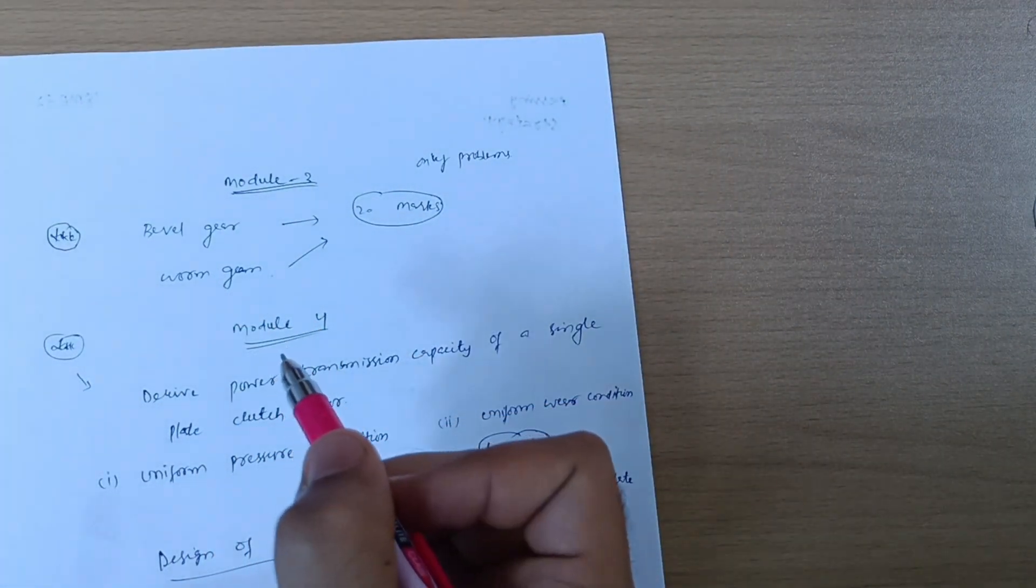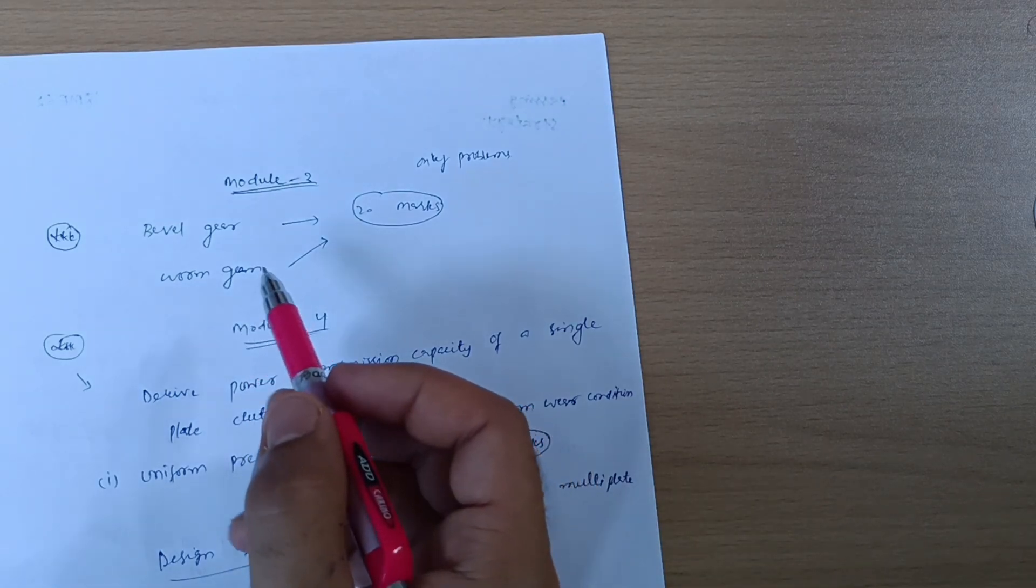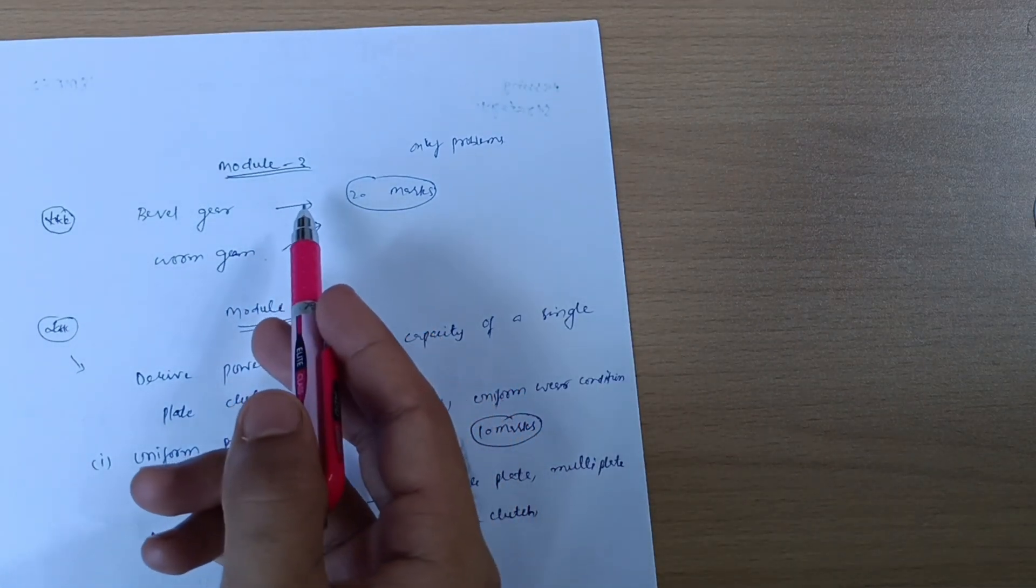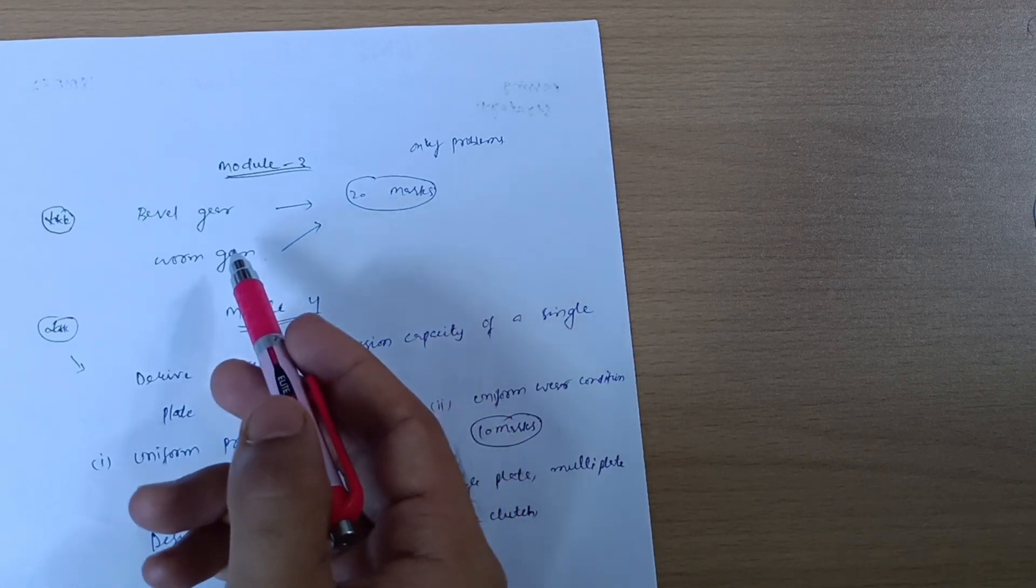But most students also referred worm gears, so it is according to your own convenience. Go through accordingly. Module 3, you can easily get 20 marks by understanding the procedure of bevel gears and worm gears.